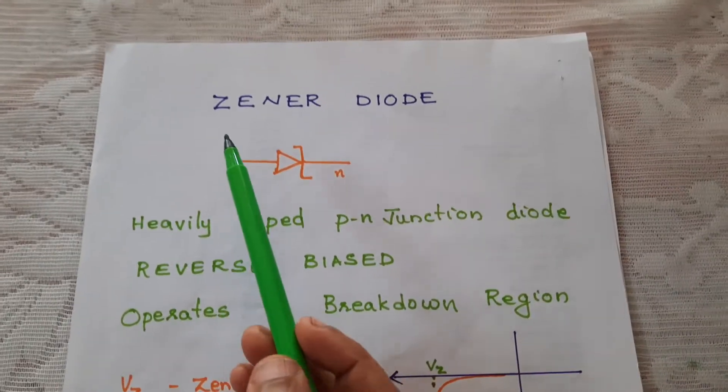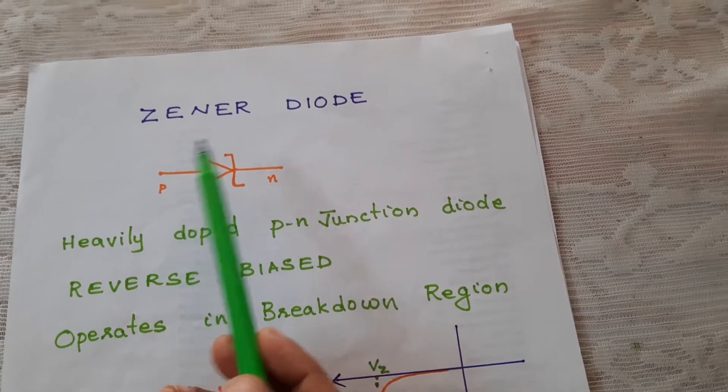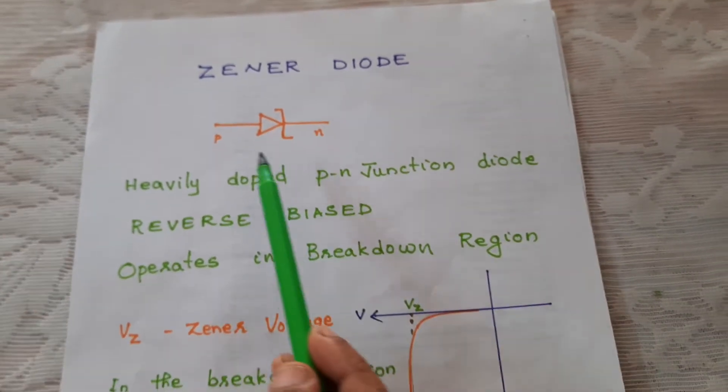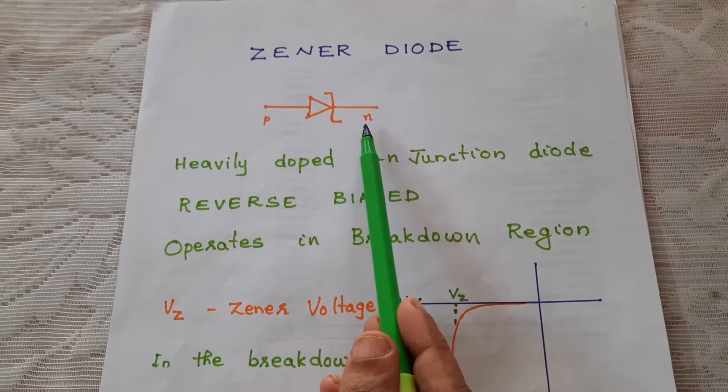In this class let us learn about Zener diode. It is a special purpose semiconductor diode. Its symbol is shown here: P terminal and N terminal.